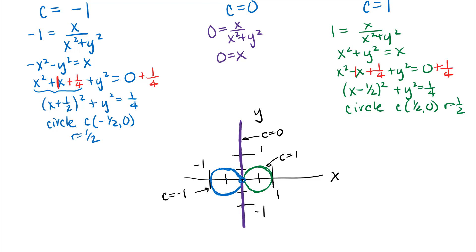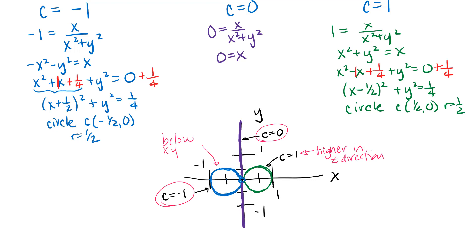These constant output values correspond to z-coordinates on the graph of the function. The c = 1 level curve is the highest value I used, meaning the function is higher in the z-direction when we have points in the first and fourth quadrants. The surface passes through the xy-plane along the y-axis (c = 0), and c = -1 corresponds to z = -1, meaning the surface is below the xy-plane to the left of the y-axis.